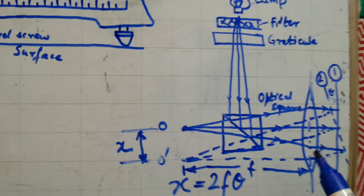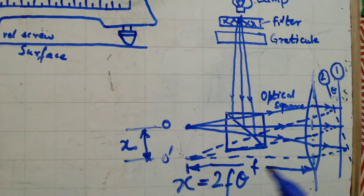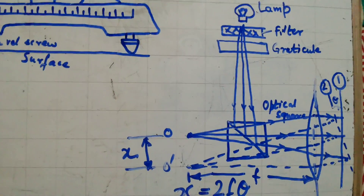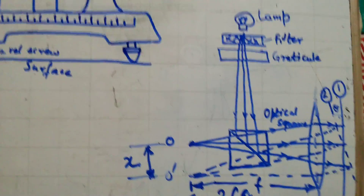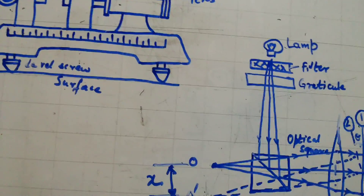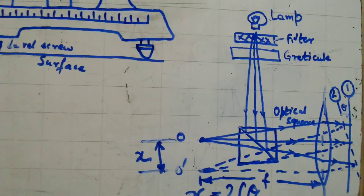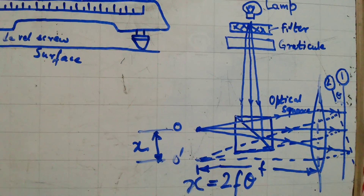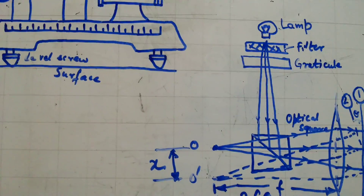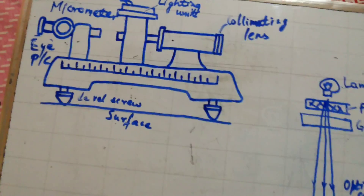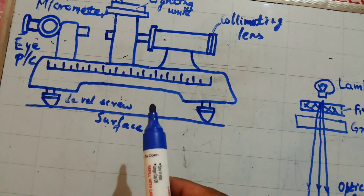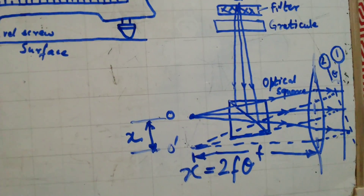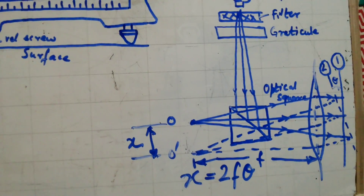This is how the auto collimator looks from inside, and this is its construction and working. Please like, comment, share, and subscribe. Thanks for watching.